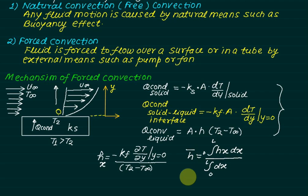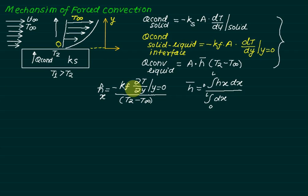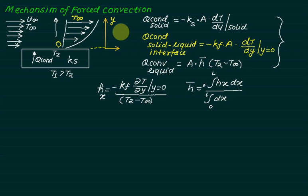This average heat transfer coefficient can then be applied. To solve for the local value Hx, we need the value of ∂T/∂y, meaning we must know exactly how temperature changes with respect to y — that is, we need the temperature profile equation. To investigate this, we first need to understand the hydrodynamic boundary layer, and once we understand that, we can proceed to the thermal boundary layer and establish the relation for ∂T/∂y.